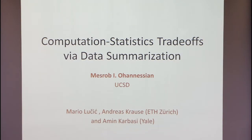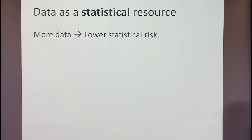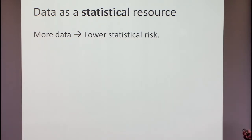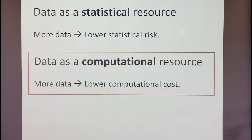The idea is that we want to talk about computation-statistics trade-offs — what is really at stake here? We are very used to thinking of data as a statistical resource: more data gives you naturally lower statistical risk. But typically we think of data as a computational hindrance — more data makes life difficult. The paradigm we want to think about is: can data be thought of as a computational resource? Can more data actually drive down your computational cost?